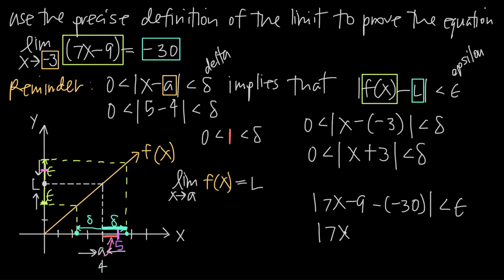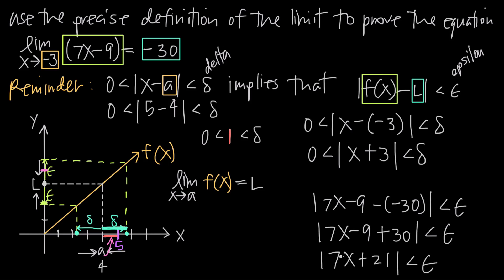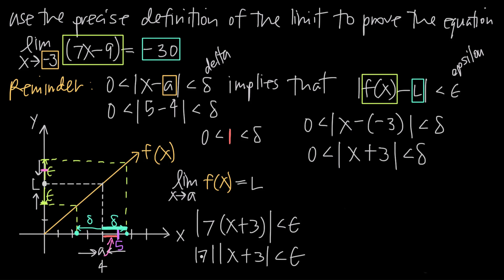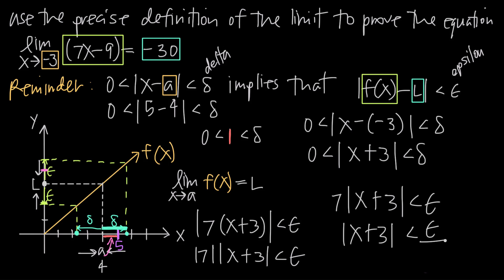Simplifying: |7x − 9 + 30| < epsilon, so |7x + 21| < epsilon. Factoring out 7 from the left side gives |7(x + 3)| < epsilon. Separating the absolute values: |7| · |x + 3| < epsilon, and since |7| = 7, we get 7|x + 3| < epsilon. Dividing both sides by 7 gives |x + 3| < epsilon/7.